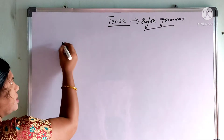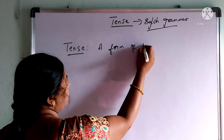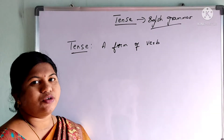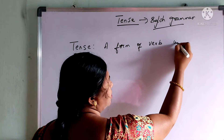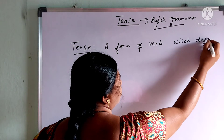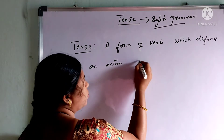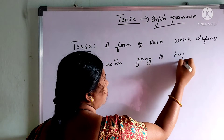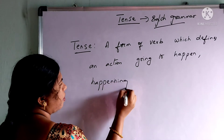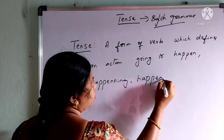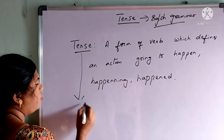What is a tense? Tense is nothing but a form of verb. In the parts of speech, you have learned the verbs. Tense is nothing but a form of verb which defines an action — which is going to happen, or happening, or has happened. Based on this, we are going to divide the tense into three types.